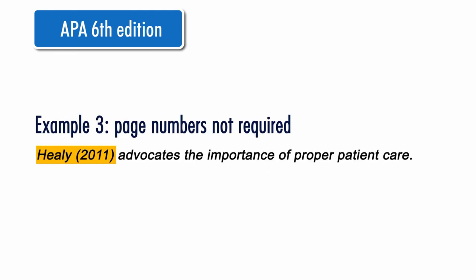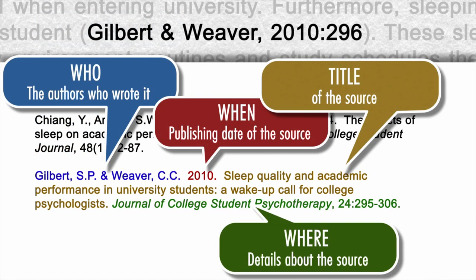According to the APA style, page numbers are only inserted if the information you used is on a specific page in the source. If you refer, for example, to an author's general outlook on a certain matter, only the author and date of publication is needed.